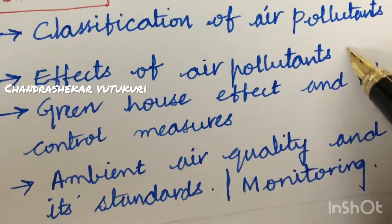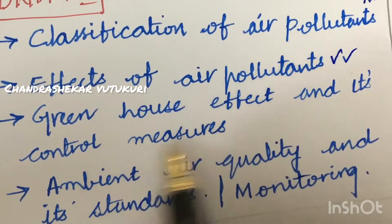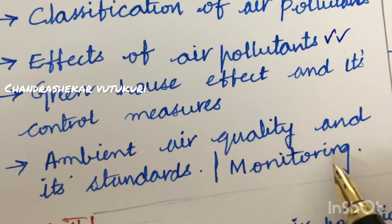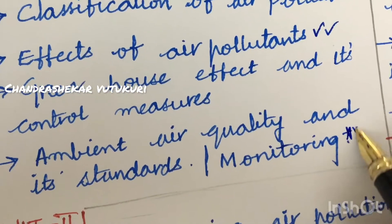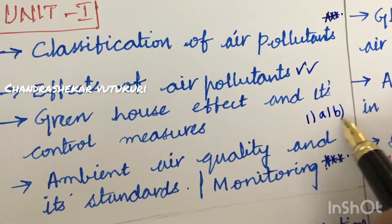The effects of air pollutants is also said to be very important, and the greenhouse effect and its control measures, and the ambient air quality and its standards and monitoring may be one of the very important and gunshot questions. From this part, we can expect 1A as well as 1B, dear students.